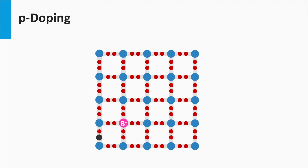The boron atom left behind is not neutral anymore but becomes negatively charged. This negative charge is fixed to the position where the boron atom is residing in the lattice. The result is that by adding a boron impurity we have one extra free mobile hole available and one fixed negative charge. This is called p-doping.